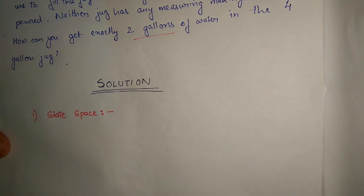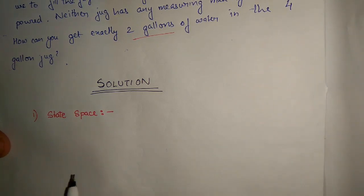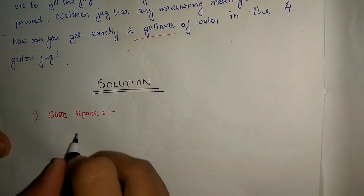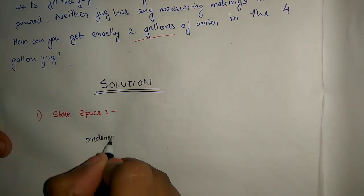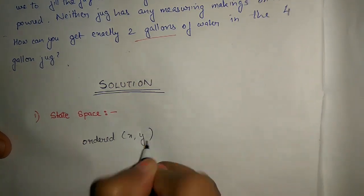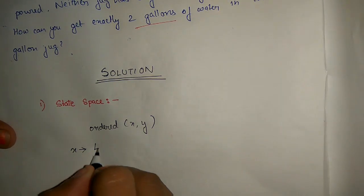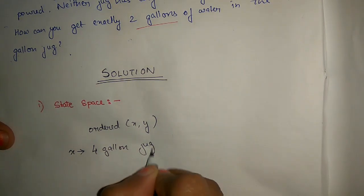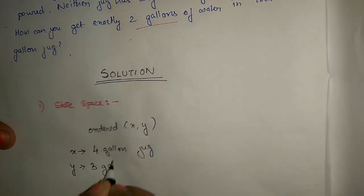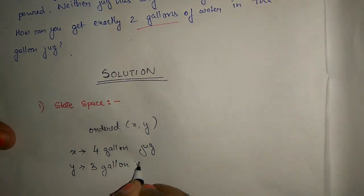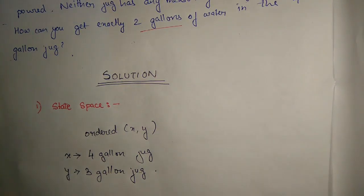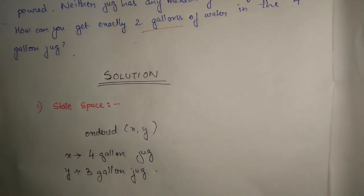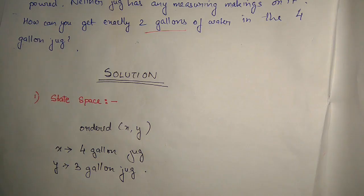The problem can be described as a set of ordered pairs of integers (x, y), where x represents the 4-gallon jug and y represents the 3-gallon jug. Now we draw the state space representation, and in order to do that, we first need to define the production rules.